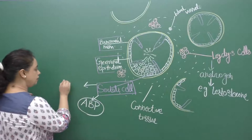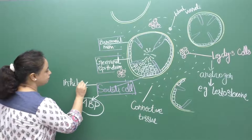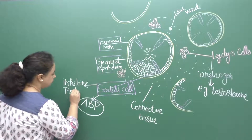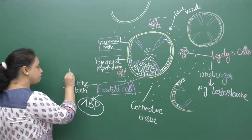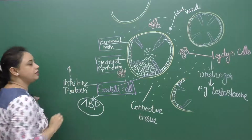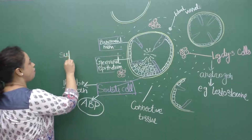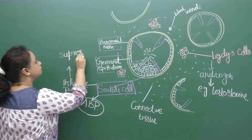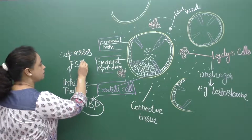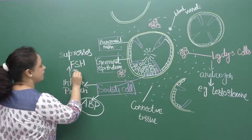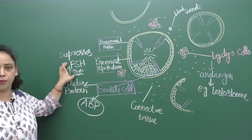The second protein secreted by Sertoli cells is inhibin protein. The function of inhibin is to suppress the activity of FSH — it suppresses the synthesis and secretion of follicle stimulating hormone (FSH).